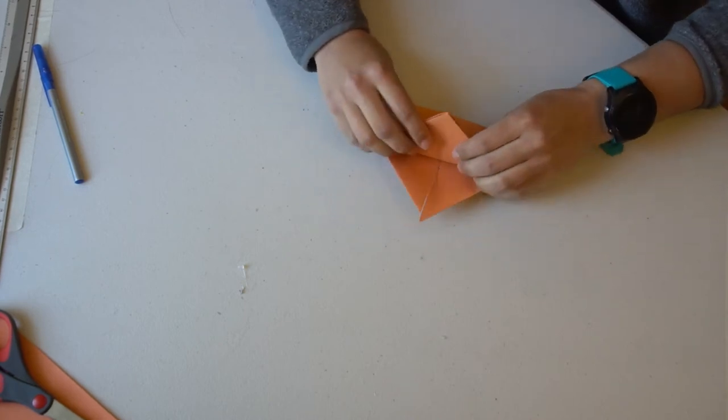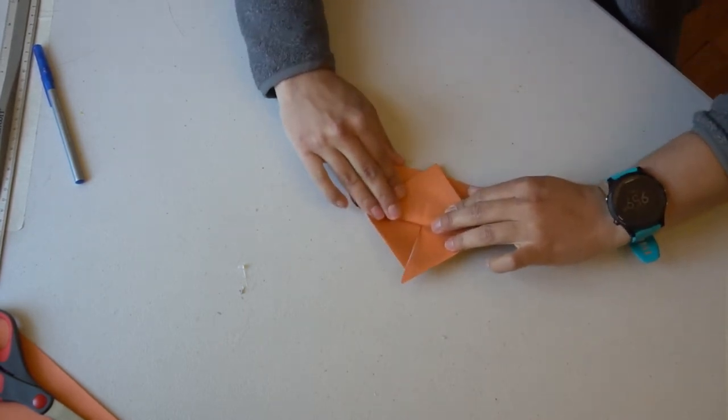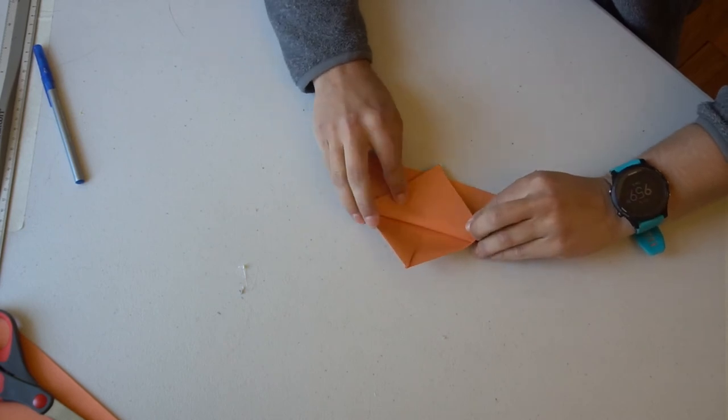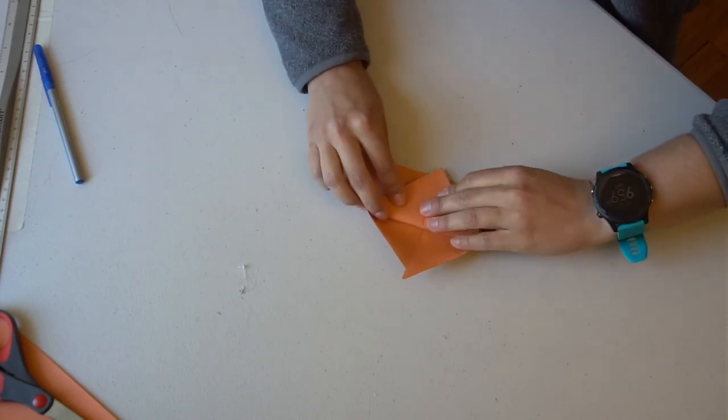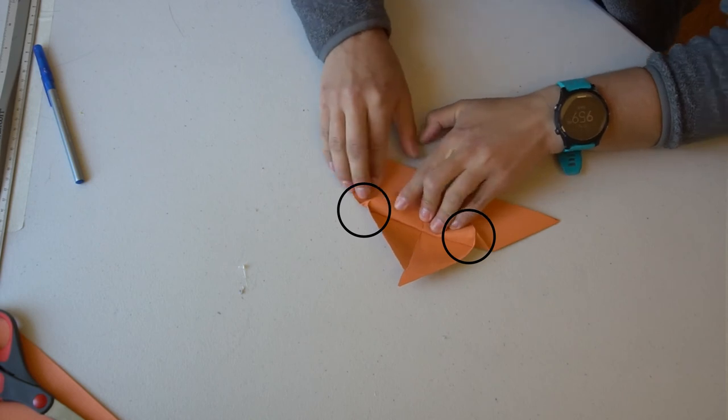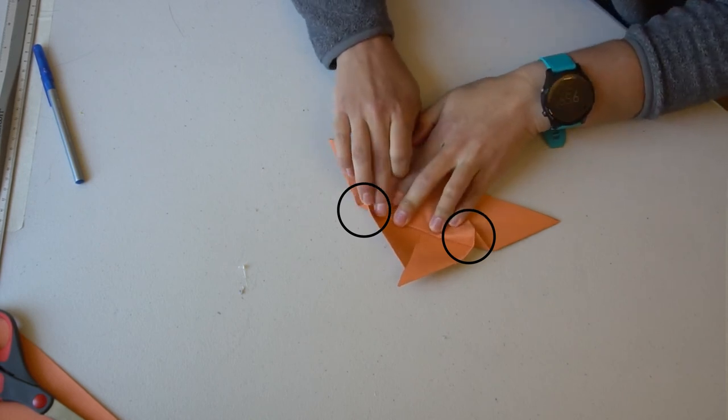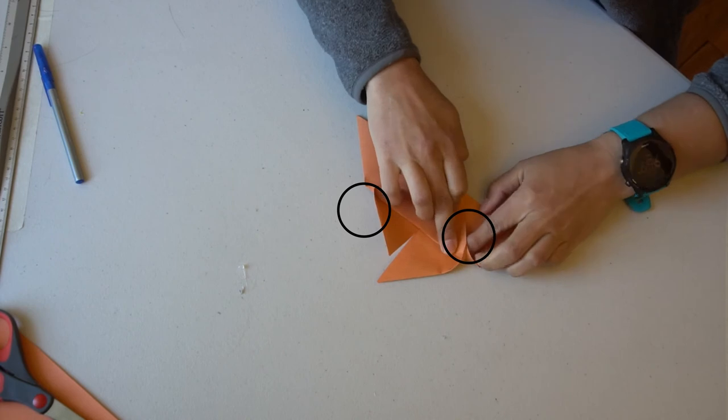I started out by folding the top of the triangle just a tiny bit past the bottom, but ended up going back and making it go a little further past. This will leave you with two funny folded areas, but don't flatten those. Leave them how they are.